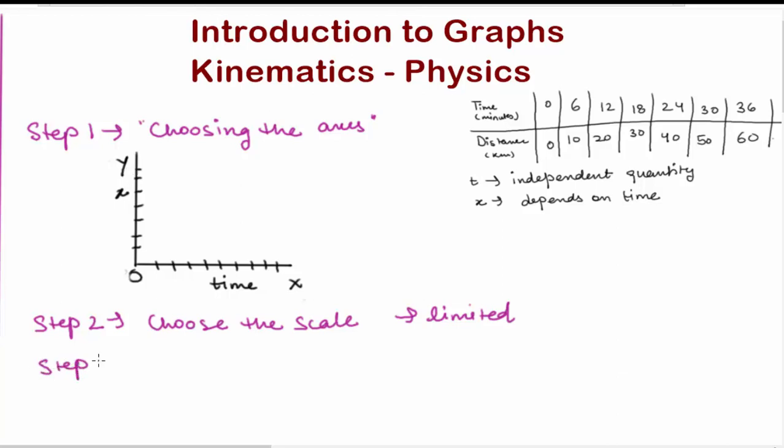In third step we would be plotting the points. Now each set of values of the two quantities are represented by a point on the graph. Now for example, the set 6 minutes and 10 kilometers is represented by point A on the graph.